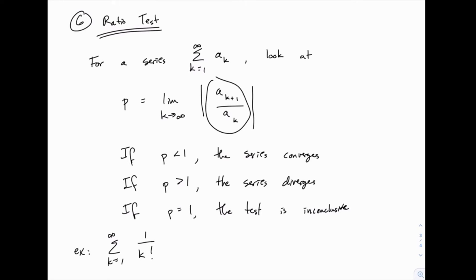We take that ratio, then use an absolute value which clears out any negatives, and then we take a limit, which means we're looking further and further down this sum and comparing one term to the one that comes after it.